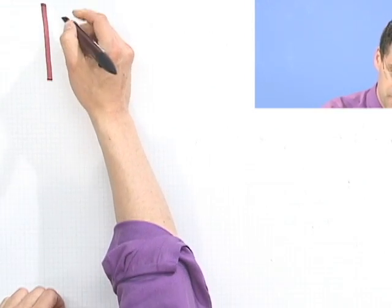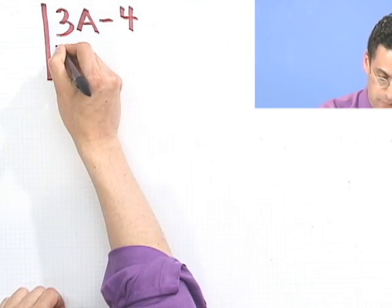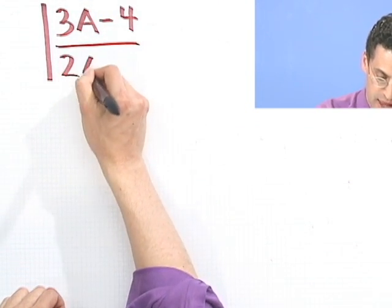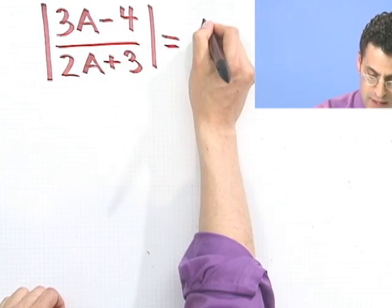The last example I want to look at is one where you have a fraction. Suppose I have absolute value of 3a minus 4 divided by 2a plus 3, and that equals 1. I'm going to give you an opportunity to try this on your own. Don't get upset or worried about the fraction. Just think about it as an absolute value equality. It means you've got to set up a couple of equations. See if you can set them up and solve them. I'll give you a chance to do it right now.